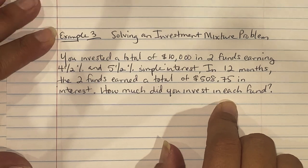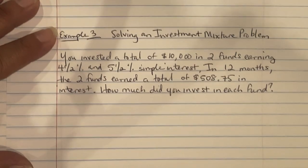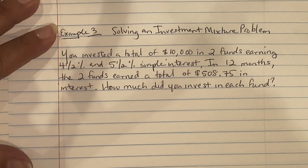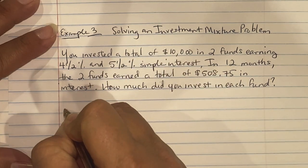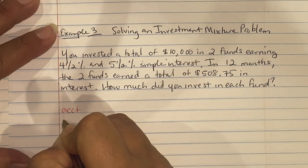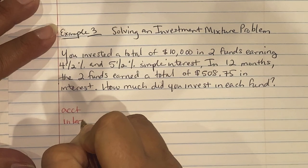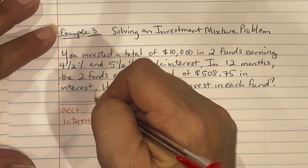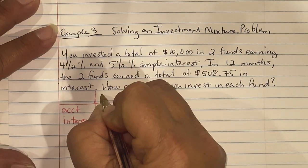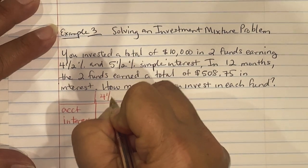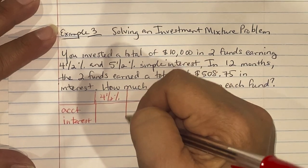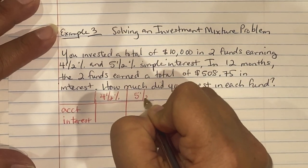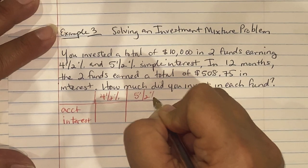For this problem, I'm going to use a table of values. So we have accounts and interest. We're going back to two equations, two unknowns. One is at 4.5%, one is at 5.5%, and then we have our total.